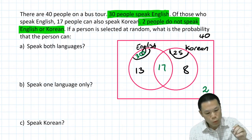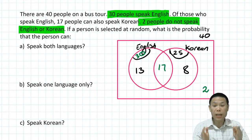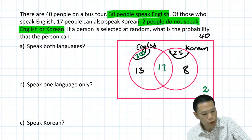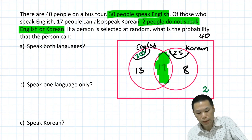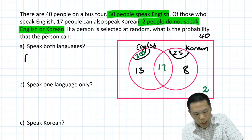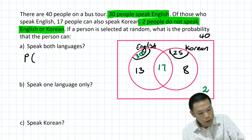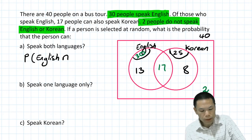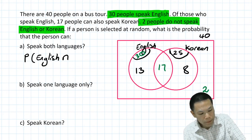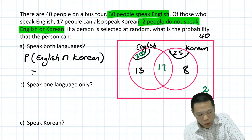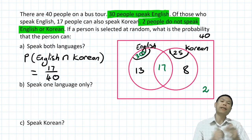Now we can answer the questions. What is the probability that the person can speak both languages — English and Korean? That's the intersection region, which is 17. So the probability of speaking English and Korean equals 17 over 40, and I can't simplify this so I leave it as it is.